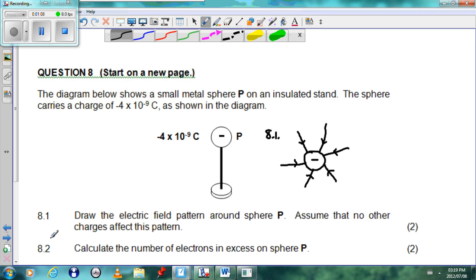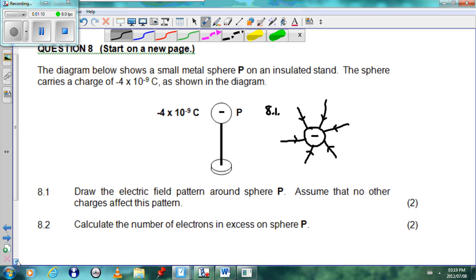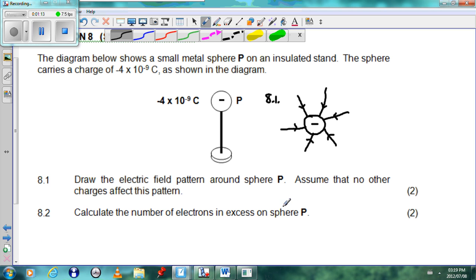Looking further, 8.2 says calculate the number of electrons in excess in sphere P. We must take the charge, the number of electrons will be equal to your charge divided by the charge of one electron.